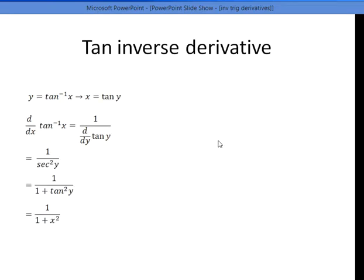So what about tan inverse? Derivative of tan inverse x, write it as 1 over d over dy tan y. So that is 1 over secant square y. Secant square y can be written as 1 over 1 plus tan square y.